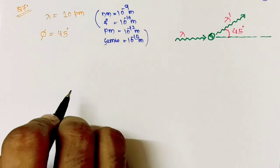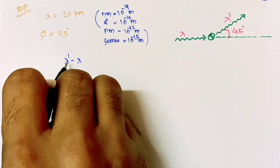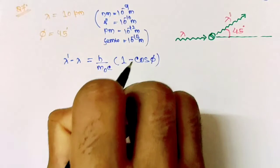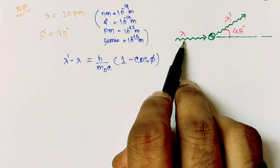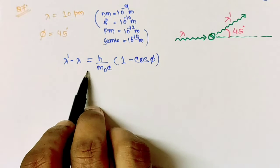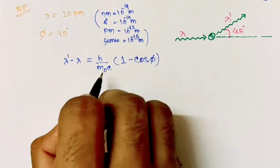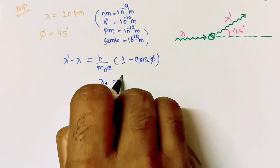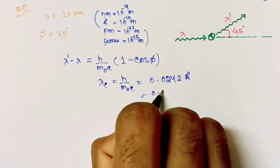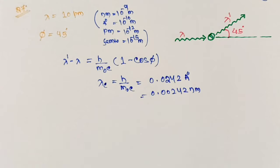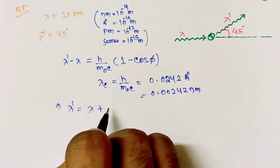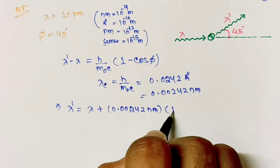From Compton scattering, the Compton shift is lambda' minus lambda equals (h / m₀c)(1 minus cos φ). This shift is independent of the wavelength of the incident radiation and independent of the target material, but depends on the scattering angle. Here h/m₀c is the Compton wavelength, with value 0.0242 angstrom or 0.00242 nanometer. So lambda' equals lambda plus 0.00242 nm times (1 minus cos φ).